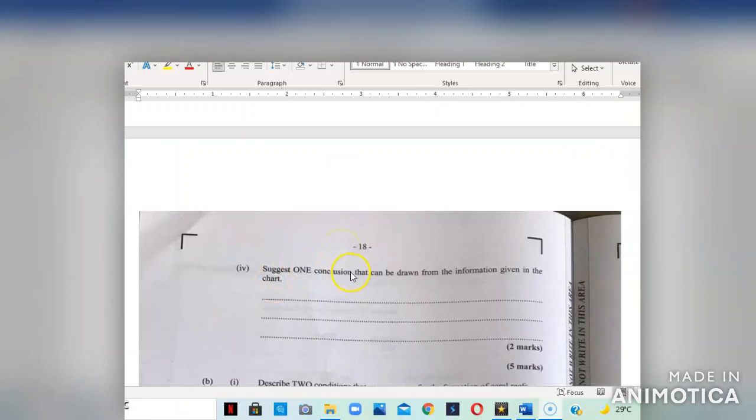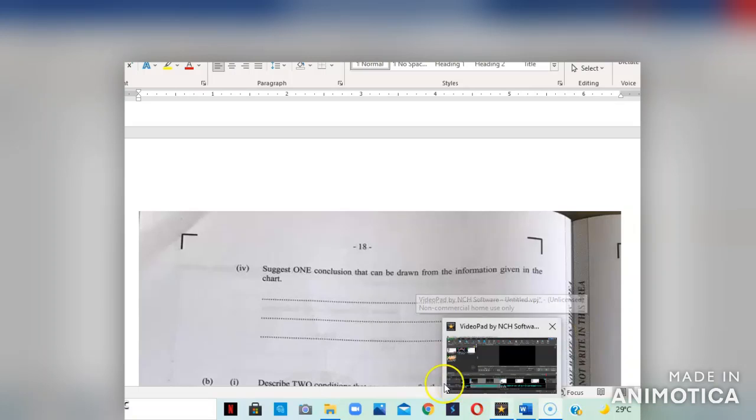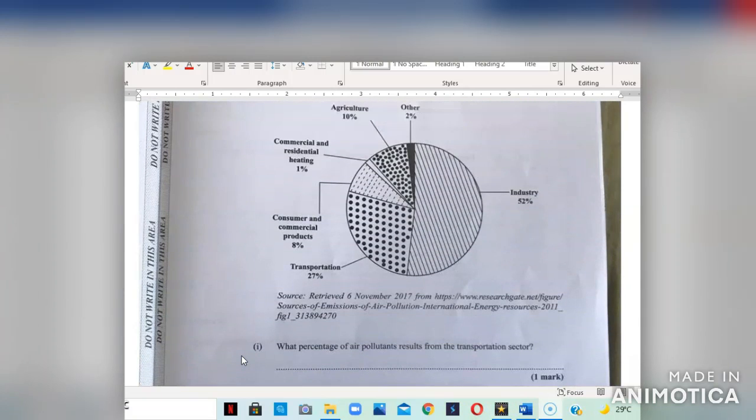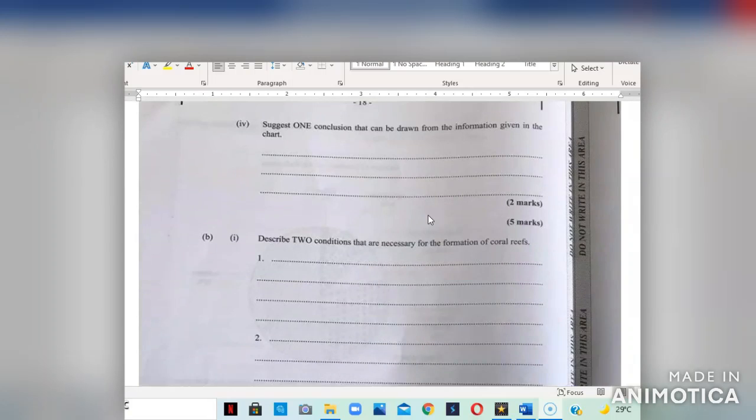Part 4 asks us to suggest one conclusion that can be drawn from the information given in the chart. There are several conclusions that you can draw. The first one I will draw is that industries contribute the most to air pollution at 52%. You can talk about commercial and residential heating is the least contributor to air pollution. You can say industries and transportation contributes the most to air pollution. Based on what you can see, you can draw conclusions based on the pie chart. And for that, you should be awarded your two marks.